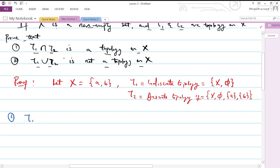Now, T₁ intersection T₂. If we take the intersection of these two, that is what is common to T₁ and T₂, we have X and empty set. So the result is {X, ∅}. We have to verify the three axioms. The first: does it contain X and empty set? We can see that X and empty set are members of T₁ ∩ T₂.